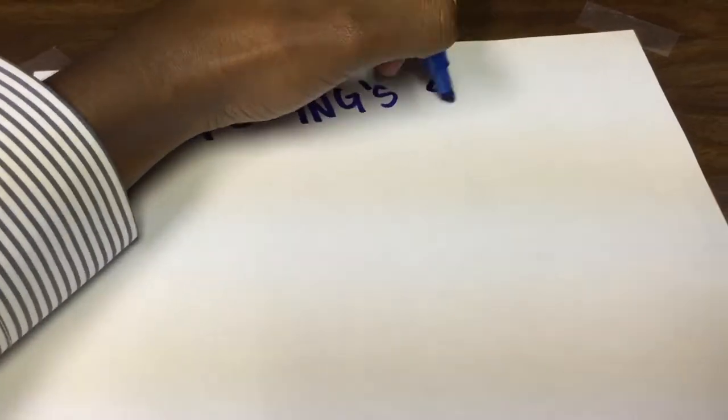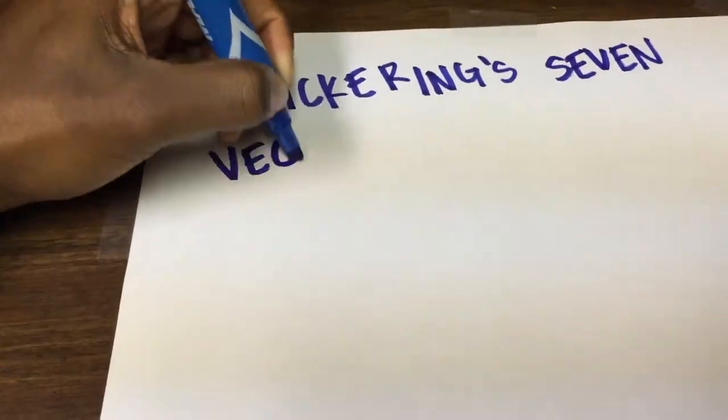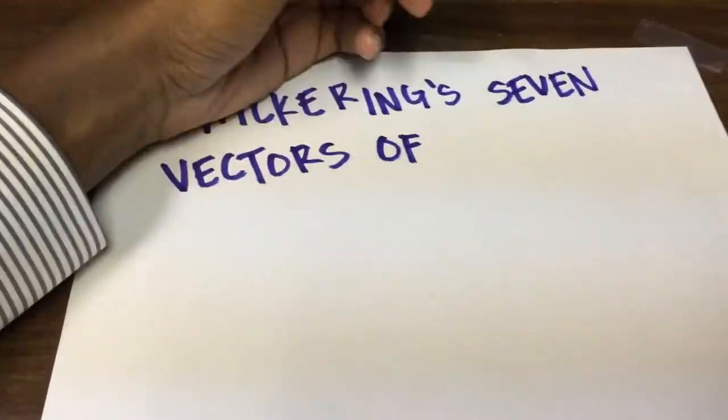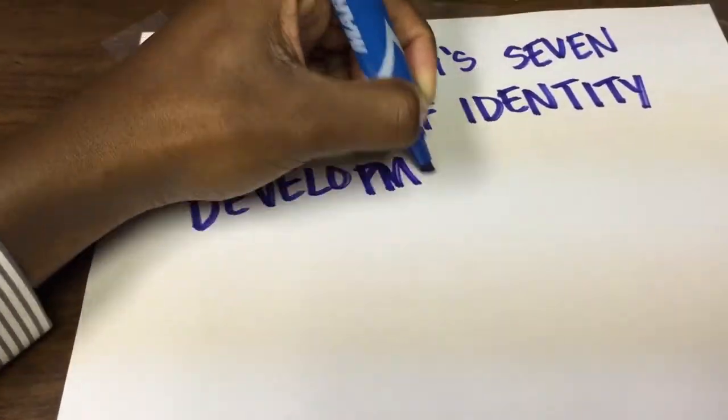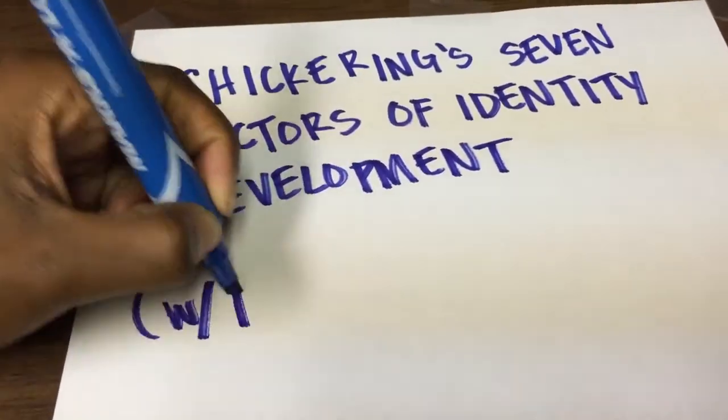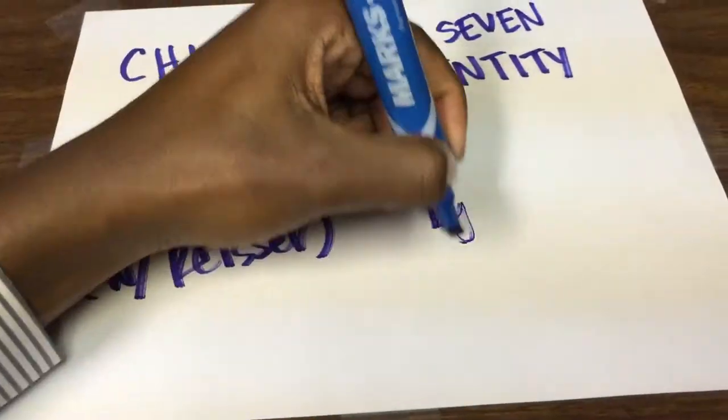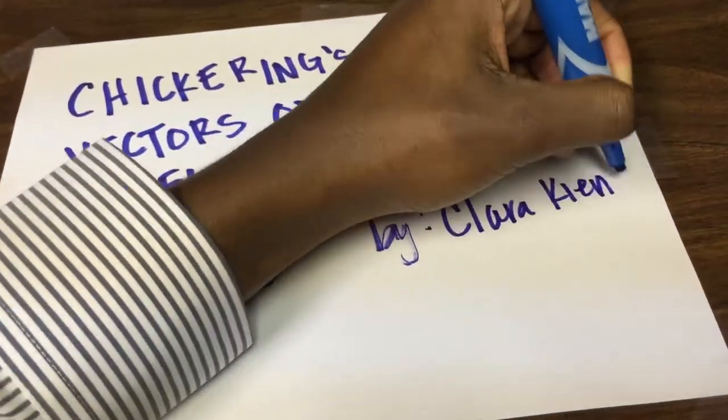This is Chickering's Seven Vectors of Identity Development with Ricer. Can't forget about her.